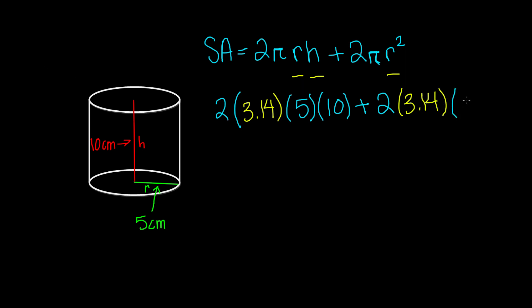Times radius squared, or 5 squared. When we multiply 2 times 3.14 times 5 times 10, we get 314.